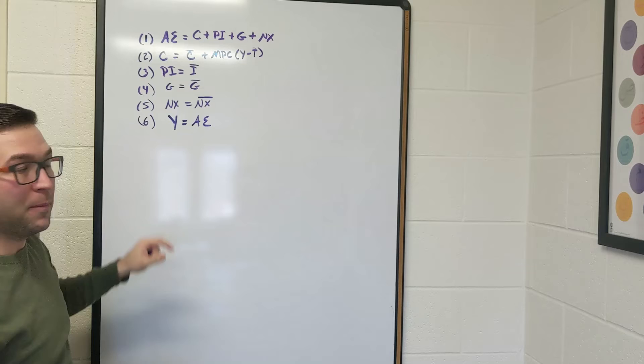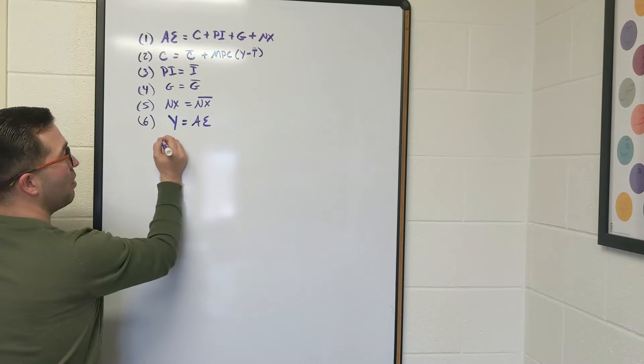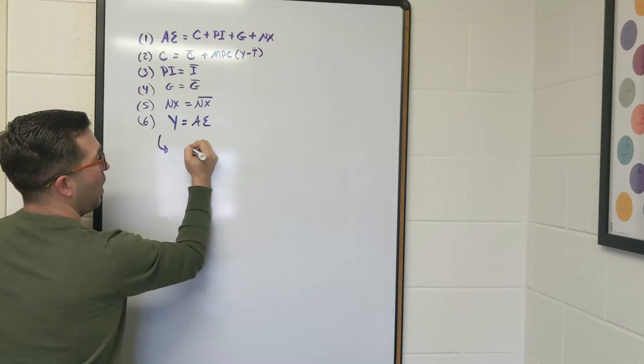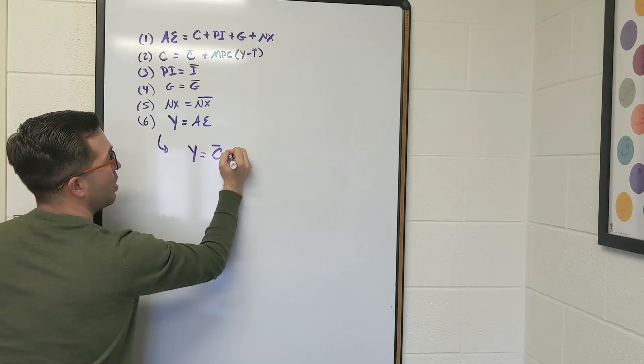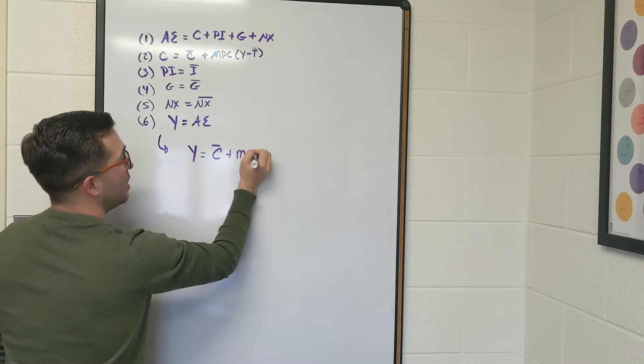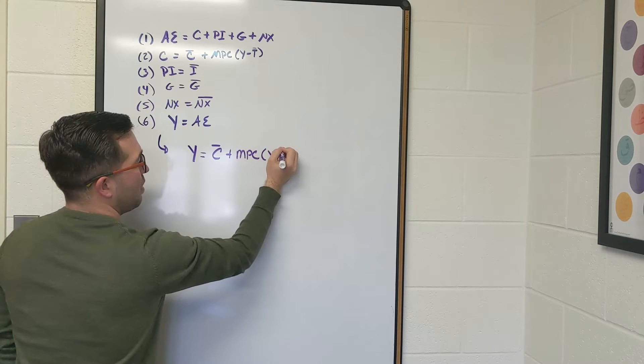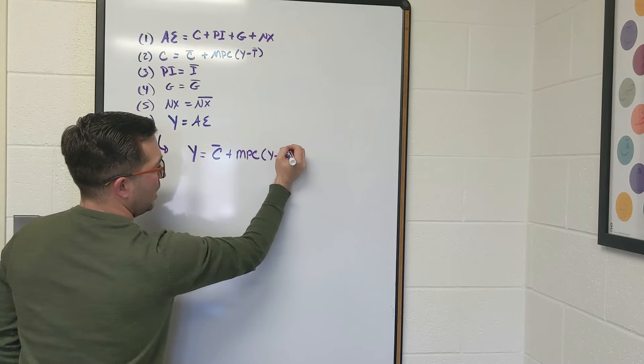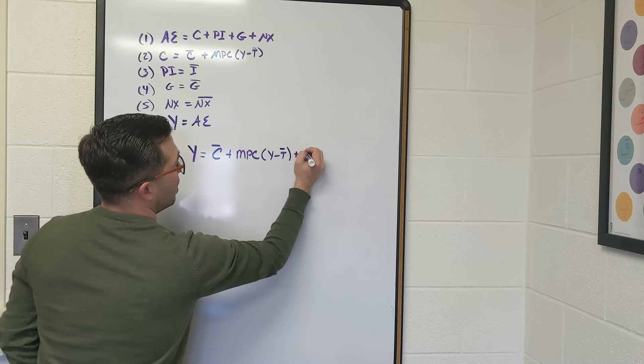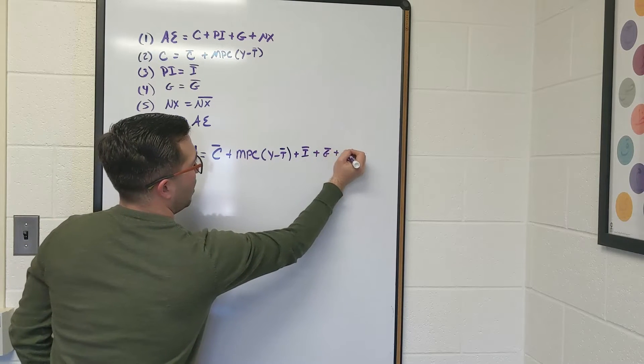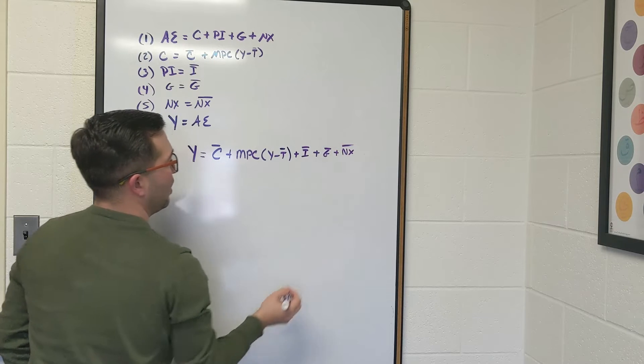and I plug all this other stuff in, I can see by taking all of these things together, I'll have Y equals consumption, which is C̄ plus MPC times Y minus T̄, plus Ī plus Ḡ plus NX̄.